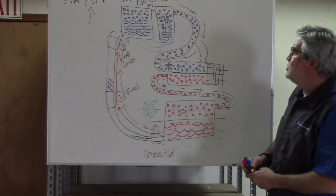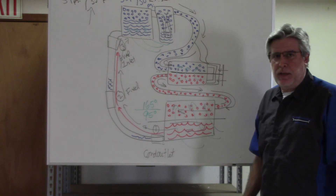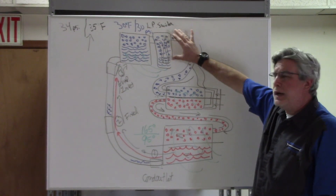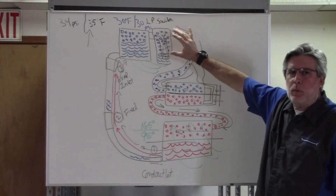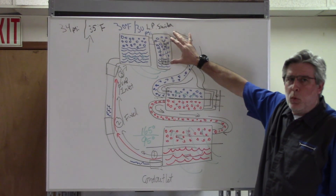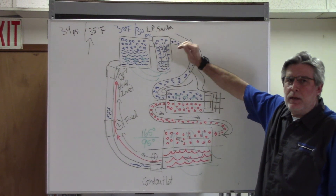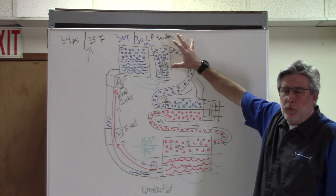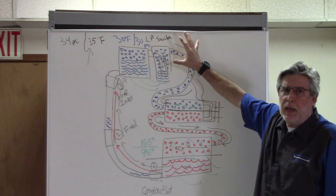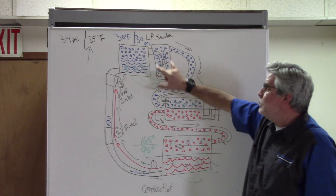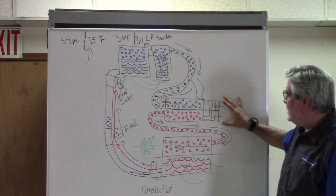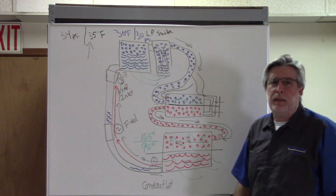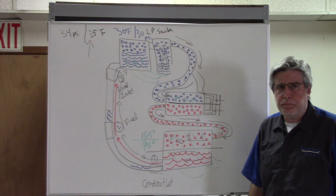The pressure switch has cut-in and cut-out contacts set at certain pressures. Most pressure switches will cut out anywhere between about 22 to 28 psi, and they'll come back in anywhere between about 38 to 42 psi. So we can cycle the compressor within that range — shutting the compressor off allows the temperature to rise in the evaporator core to keep the evaporator from freezing.